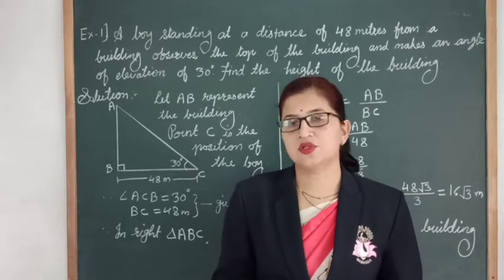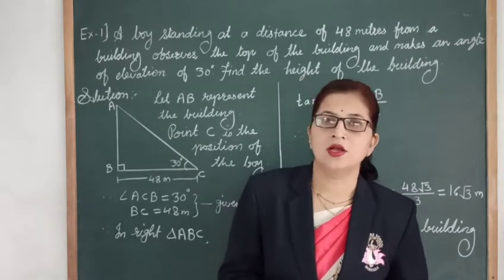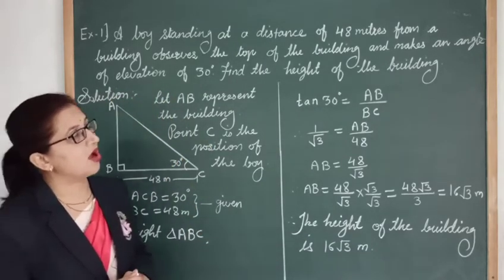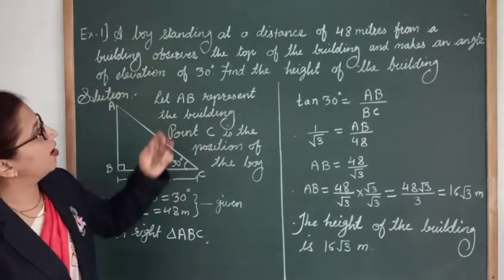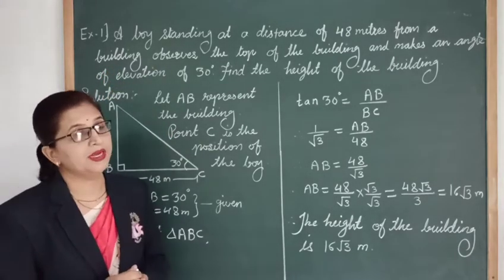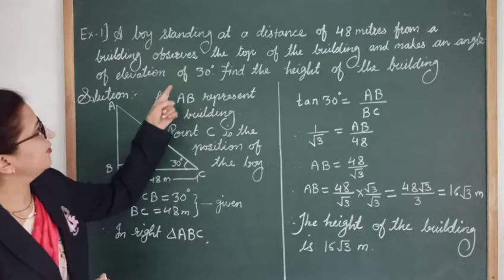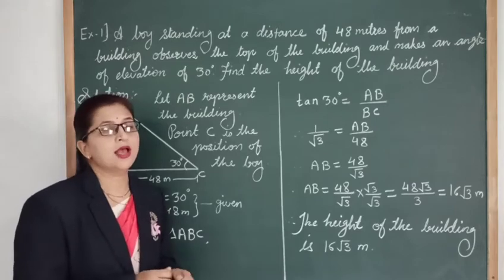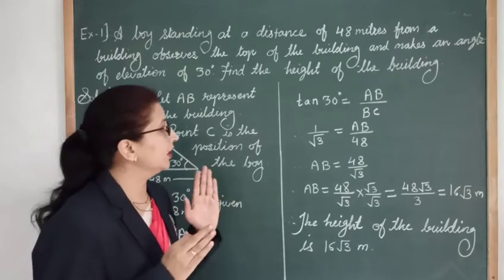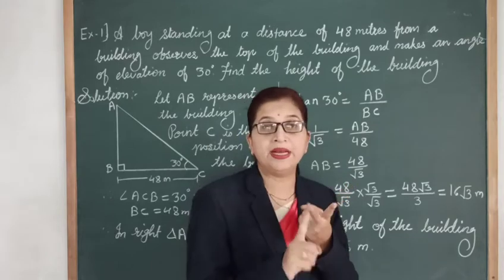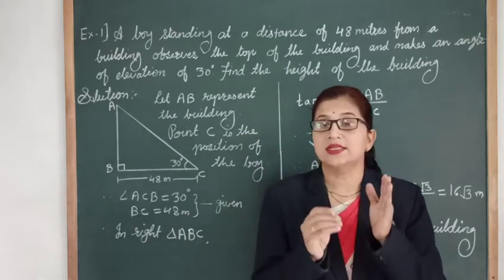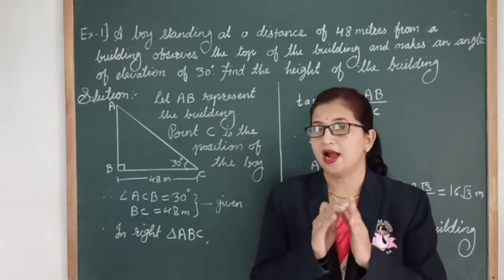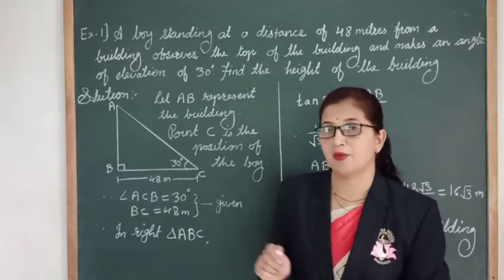Let's apply trigonometry to solve word problems. Here is the question: a boy standing at a distance of 48 meters from a building observes the top of the building and makes an angle of elevation of 30 degrees. Find the height of the building. As mentioned, in such questions, towers, buildings, trees, and lighthouses are considered perpendicular to the ground, and we represent the situation as a diagram.